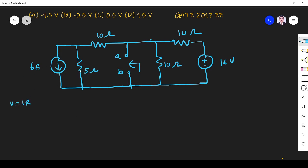6 into 5 is 30 volts. Current goes down so it is minus-plus. So 30 volts, then it will become series. 5 ohm, then this 10 ohm will be in series, so it will be 15 ohm.